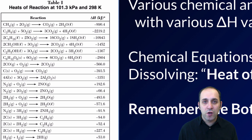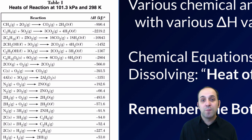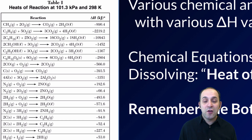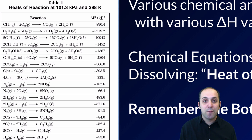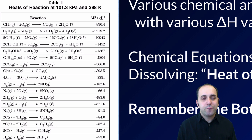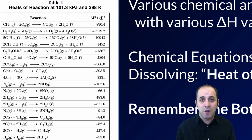Reference Table I gives us twice as much information as it appears. We can write the reverse of any of these reactions so that products become reactants and reactants become products. Reverse the arrow and the delta H value will be equal but opposite in sign. So we have twice as much information from this chart than what we're being shown just by looking at it.